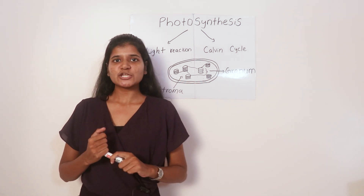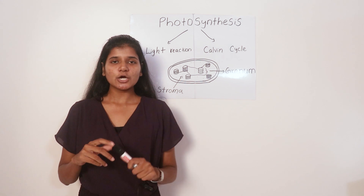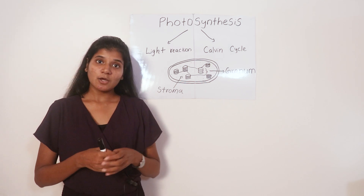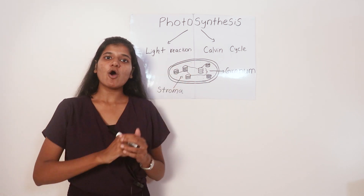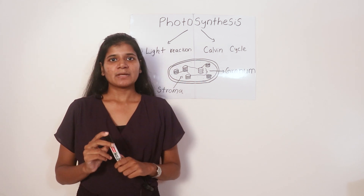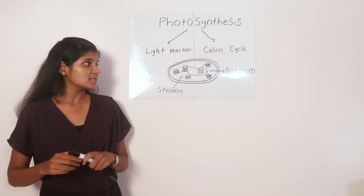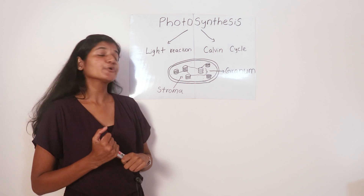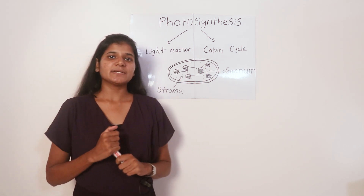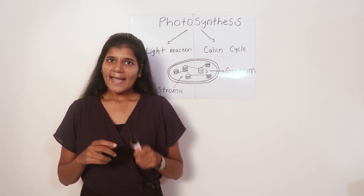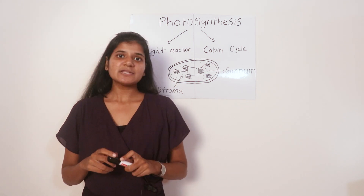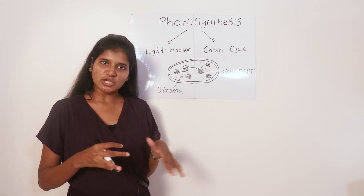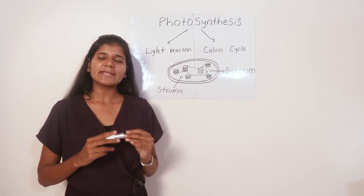The light reaction takes place in the thylakoid membranes of the chloroplast. The thylakoid membranes are stacked one on top of the other and form a unit called grana. That is where the light-dependent reaction occurs. The Calvin cycle occurs in the stroma of the chloroplast — a gel-like structure which contains all the enzymes needed for the Calvin cycle.